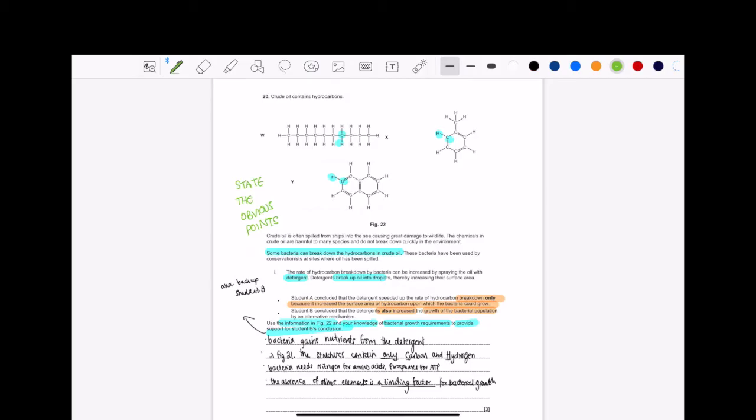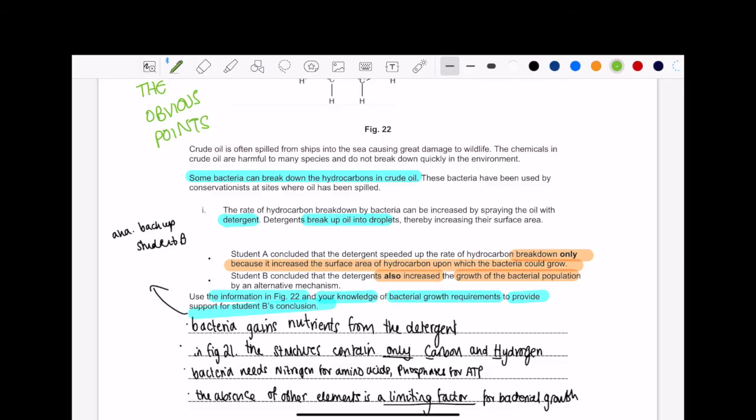Okay, so much is going on here. You might be like, what on earth do I do? I'm going to start overthinking. But don't worry, calm down, it's fine. Let's read the question, okay, before we read it, anything else. Use the information of figure 22 and your knowledge of bacterial growth requirements to provide support for student B's conclusion. Here's what I would do. I would take a step back. I would rephrase it. So I need to use figure 22 and I need to use my own knowledge on bacterial growth requirements.